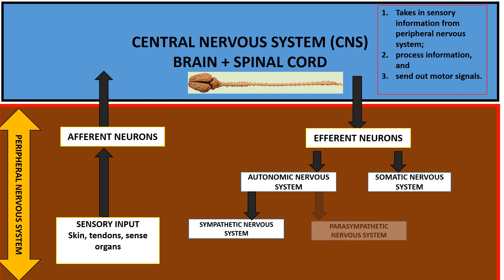The other arm of the autonomic nervous system that receives efferent neurons is the parasympathetic nervous system, which has a tendency of slowing down physiologic functions such as heart rate, breathing, and GIT motility.